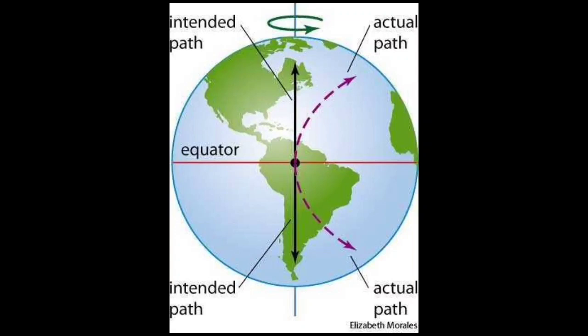We should remember that the Coriolis force is nil at the equator and maximum towards the poles. This is because the rotational speed of the earth is maximum at the equator and decreases towards the poles.